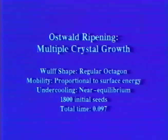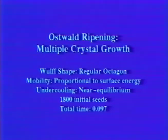As a demonstration of the flexibility of the approach, we display a simulation of Ostwald ripening. 1,800 octagonal seeds of random sizes and locations are placed in a near equilibrium state. Material then diffuses from small crystals, which are forced to shrink by surface tension, to larger ones which are able to grow.